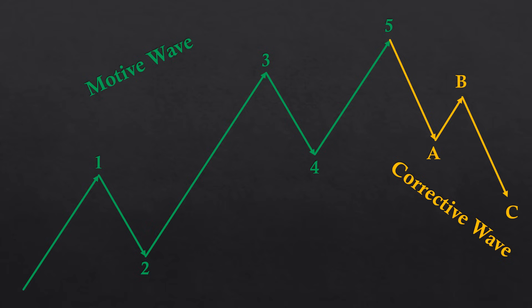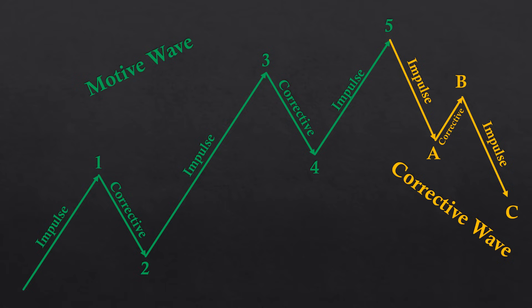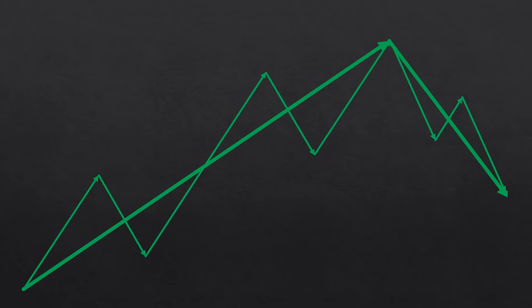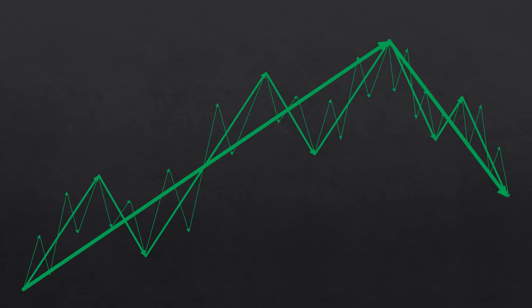The large motive wave is broken down into five sub waves, and the large corrective wave is broken down into three sub waves. A wave that goes in the same direction as the wave in a larger degree is called an impulse wave. Waves 1, 3, 5, A, and C are impulse waves. Waves 2, 4, and B are corrective waves. Elliott waves have a fractal quality, meaning waves repeat inside themselves in multiple degrees. The fundamental 5-3 wave pattern can be seen repeating inside itself in three different degrees, and the illustration begins to resemble real price action as more degrees are shown.